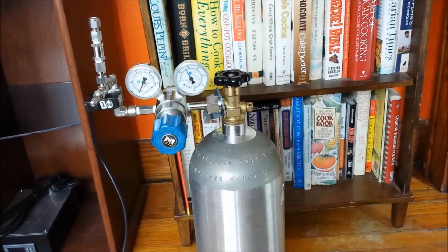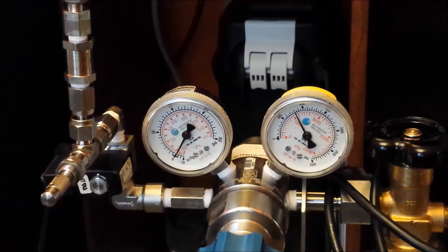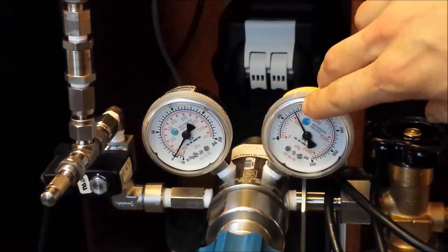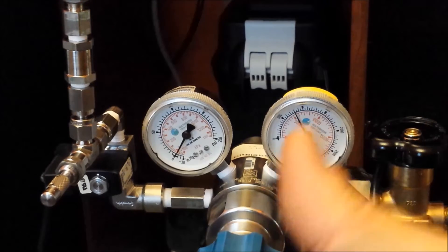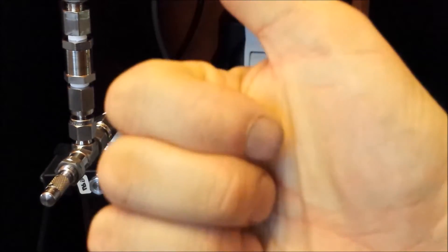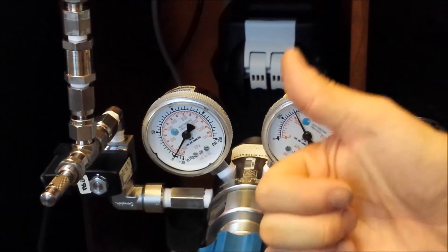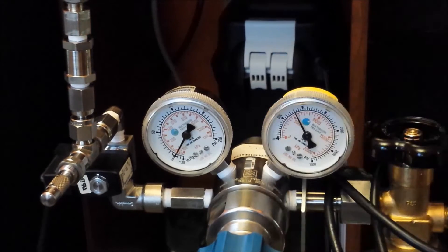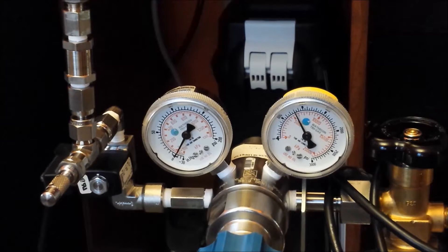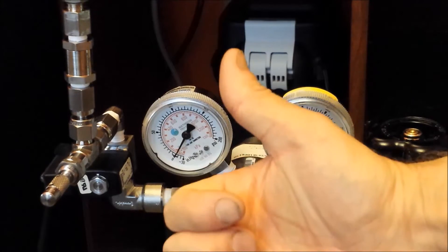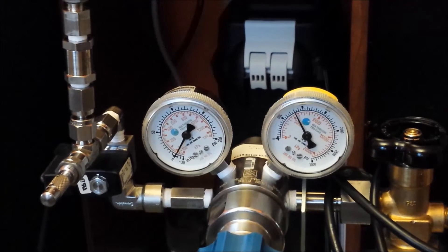At that point you turn off the CO2 tank and you will still have an 800 pressure reading at the high pressure gauge and then you wait 6 hours. When you come back, if the reading is the same, i.e. 800 psi, the first stage of your dual stage regulator is good to go and you can proceed to the second stage.